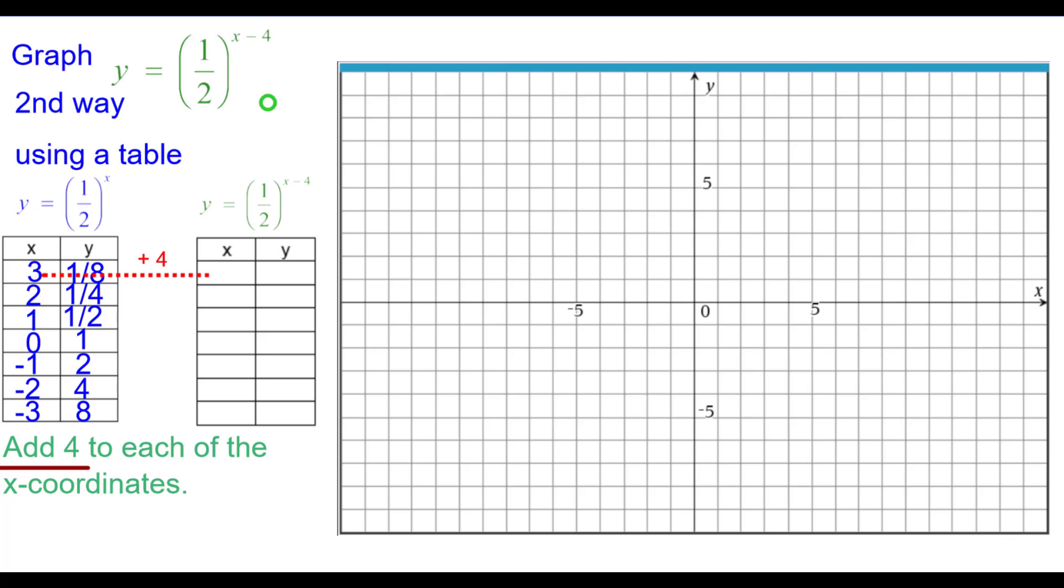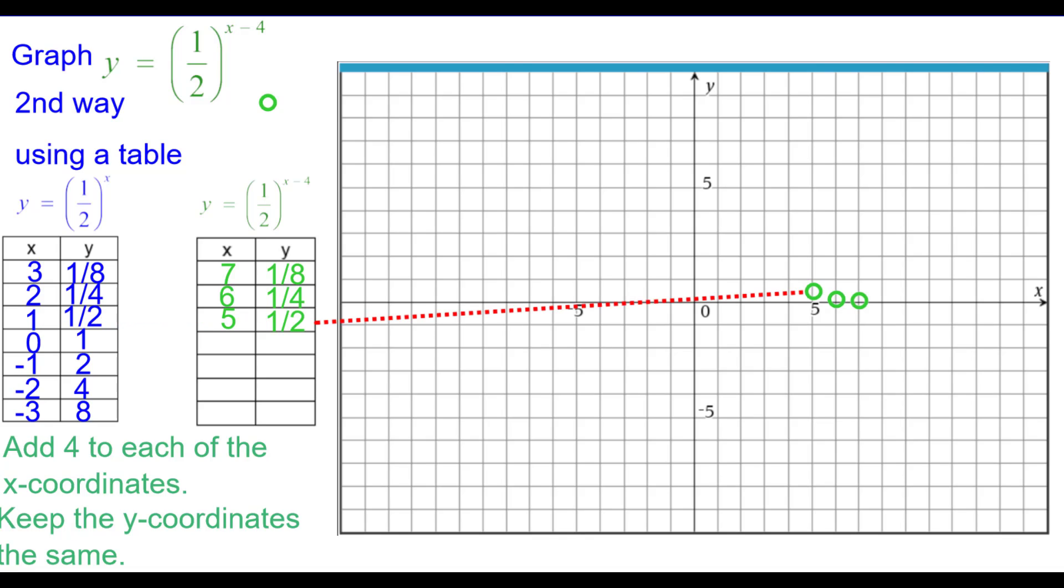And so 3 plus 4 is 7, and we keep the y-coordinates the same, one-eighth. So (7, 1/8). 2 plus 4 is 6, one-fourth. 1 plus 4 is 5, one-half. 0 plus 4 is 4, 1.